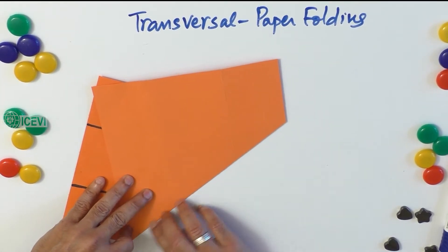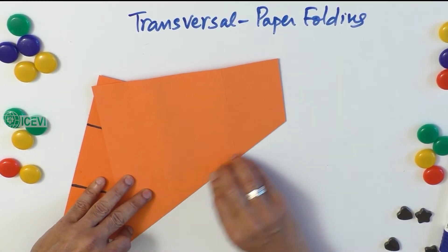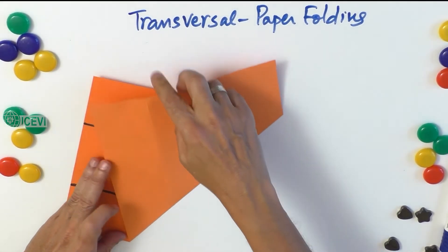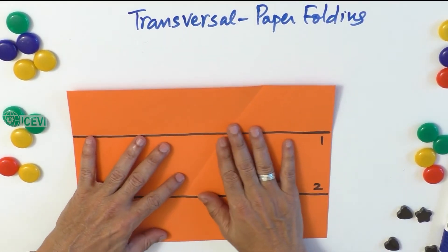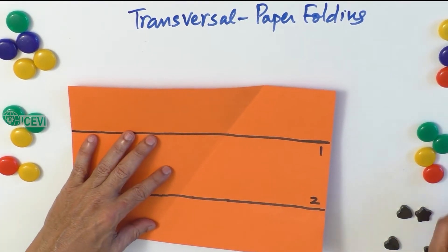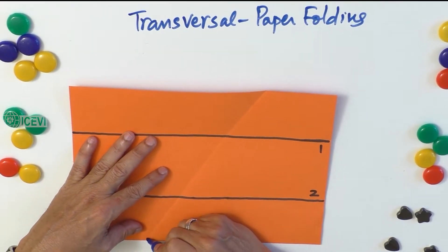Let the transversal go through the lines at two different points. Now we have the transversal.